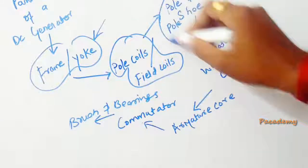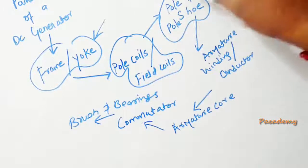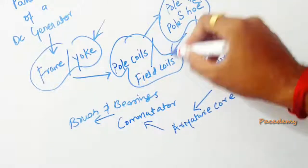The other part is the pole or pole shoe. The pole is a structure on which the field windings are wound.